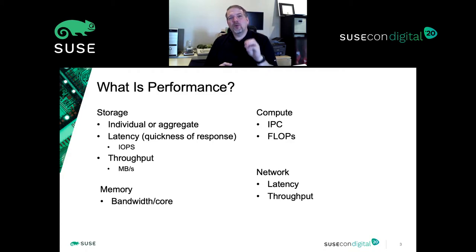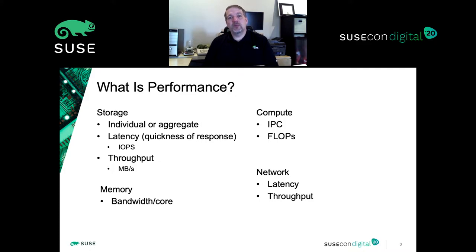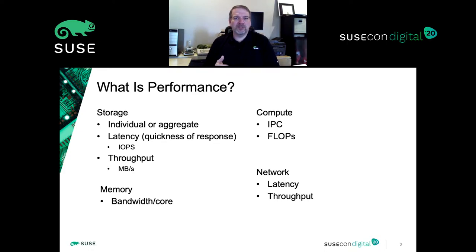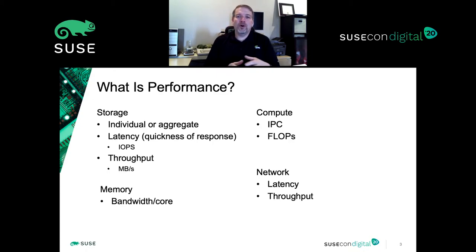Really zeroing in on what performance means matters. In HPC, we also need to think about whether we're concerned with an individual stream or many readers and writers — an aggregate number. For memory, the HPC industry looks at bandwidth per core. On the compute side, it's instructions per clock cycle (IPC) and flops — floating point operations. For the transport layer, it's network and InfiniBand latency and throughput.